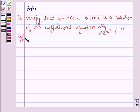Let's start with the solution. So here we are given that y equals A cos x minus B sin x.